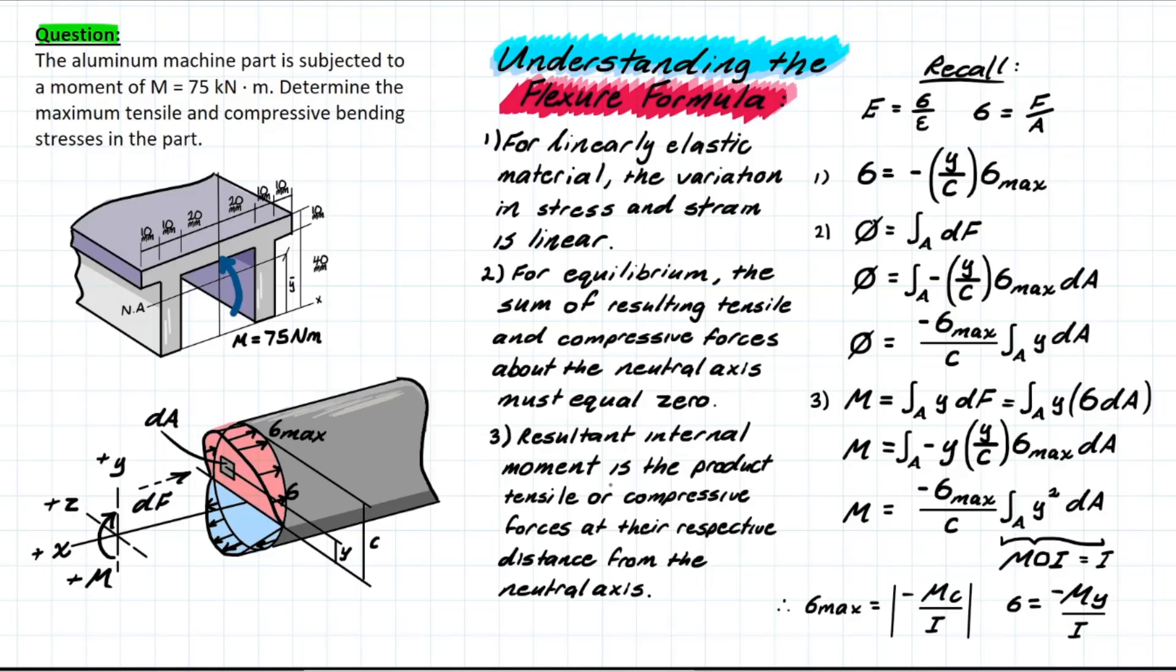I'm also going to explain why the formula is important. Before even getting into this understanding, let's talk about the formula and why it's important in the first place and what it does. The flexure formula is a relationship that relates the stress distribution in a member to its internal resulting bending moment. Why is that important?